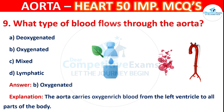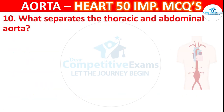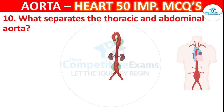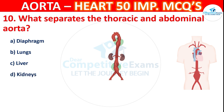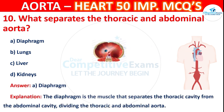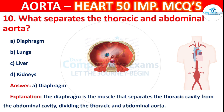Question number 10: What separates the thoracic and abdominal aorta? Options are diaphragm, lungs, liver, or kidneys. The correct answer is A — diaphragm. The diaphragm is the muscle that separates the thoracic cavity from the abdominal cavity, dividing the thoracic and abdominal aorta.